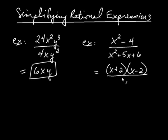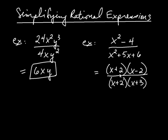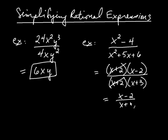And in the denominator, it's going to be x plus 2 times x plus 3, factoring that trinomial. Now the x plus 2's can cancel — this entire factor cancels with this factor. And I'm left with just x minus 2 divided by x plus 3.